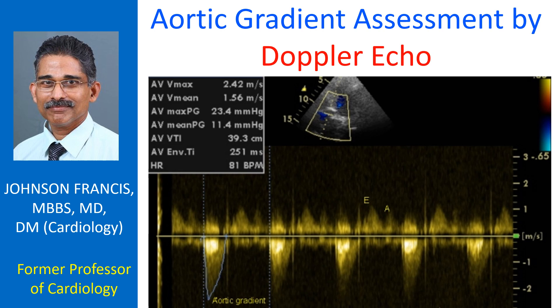In this image, measurement of aortic peak gradient and mean gradient are illustrated. The early diastolic E and late diastolic A waves of mitral inflow are also demonstrated. Peak aortic gradient and mean aortic gradient are mildly elevated in this case.